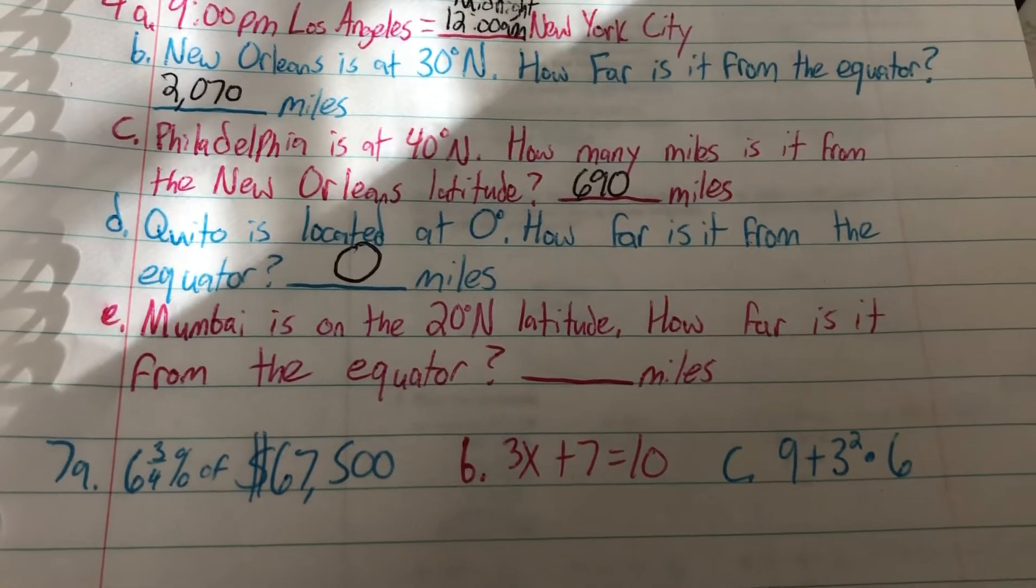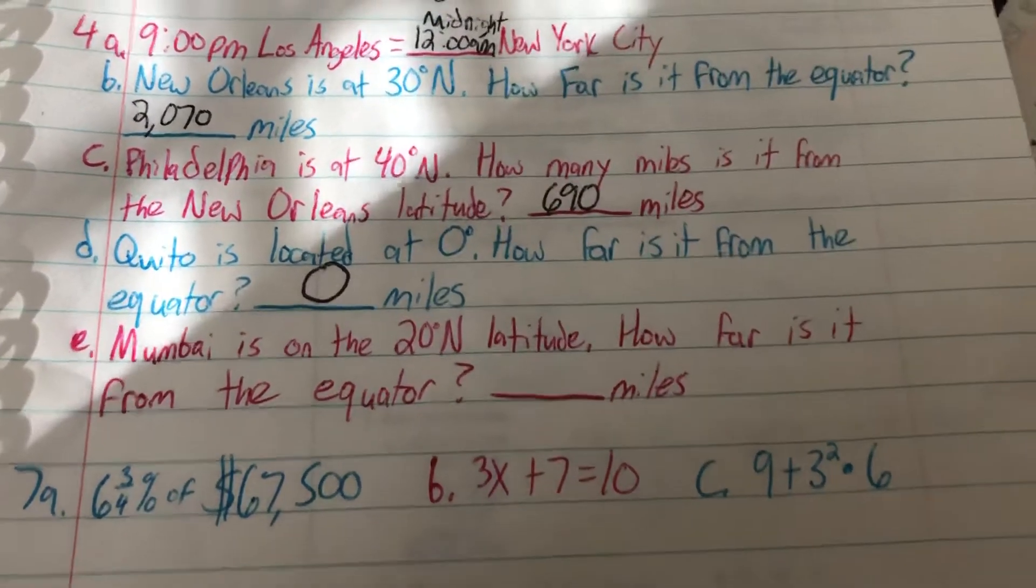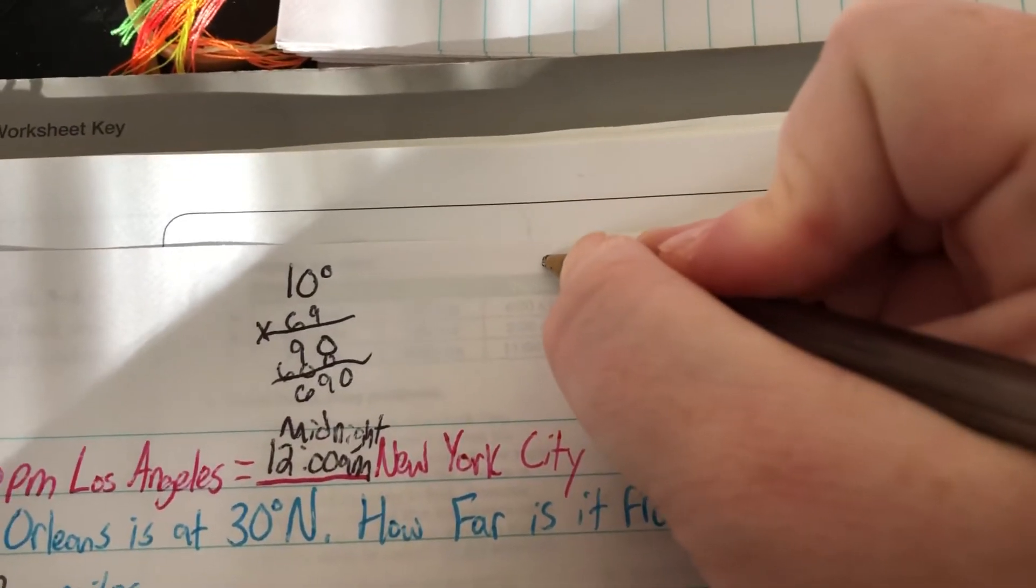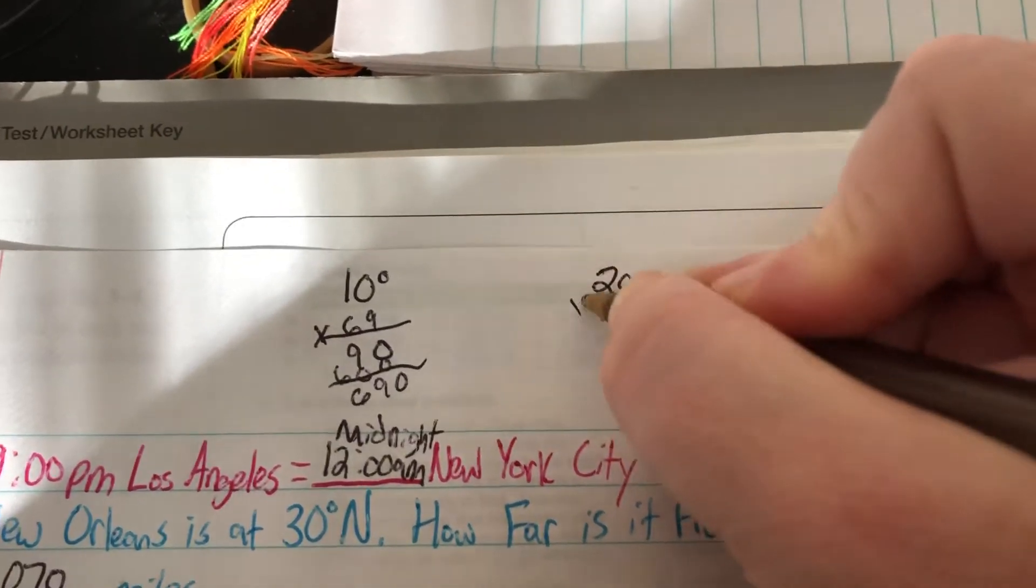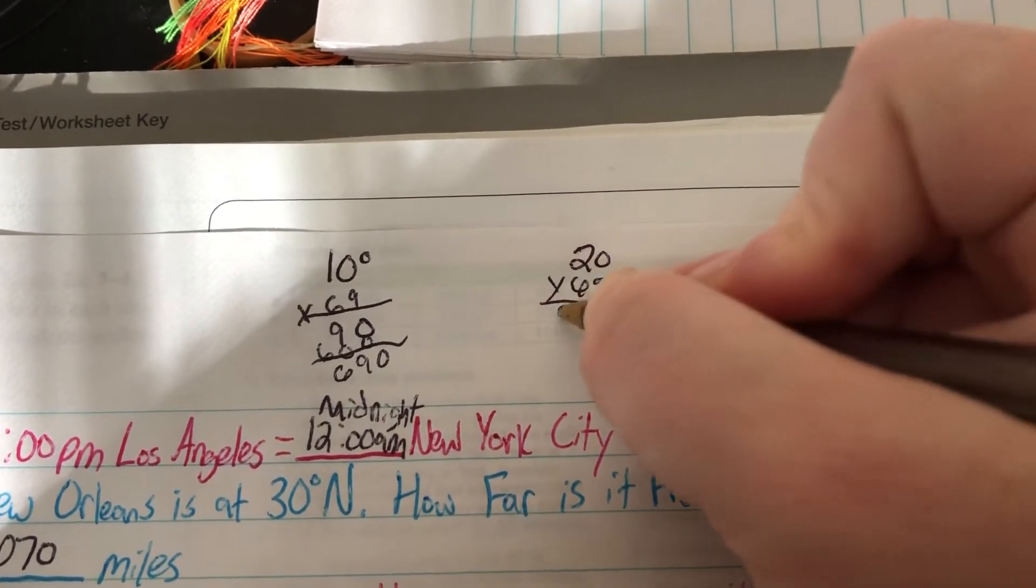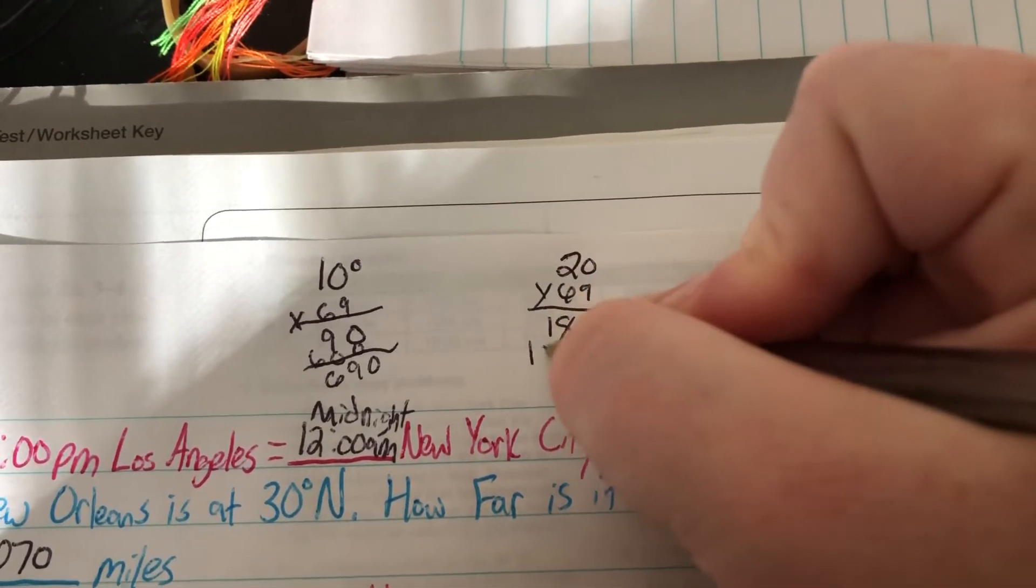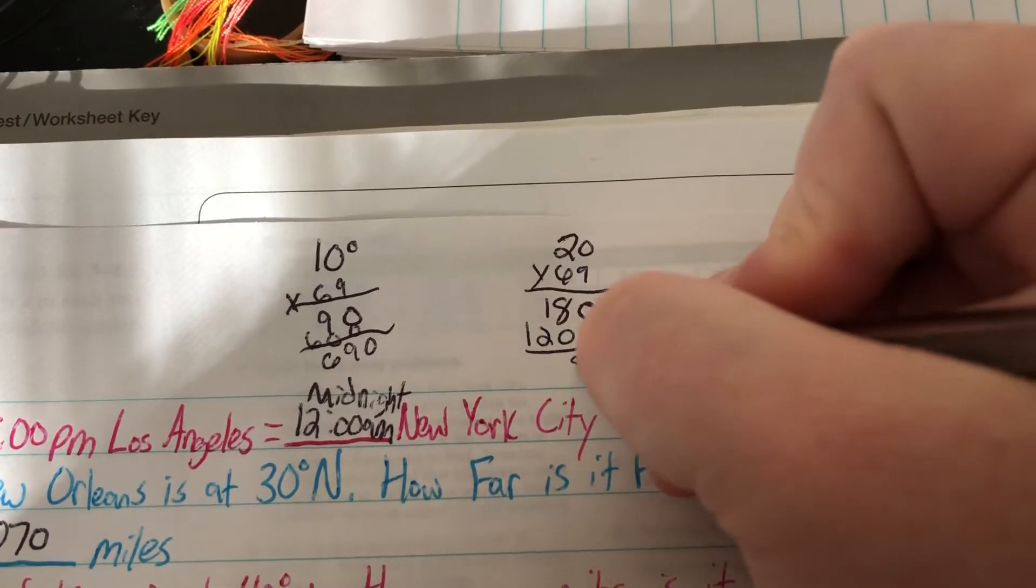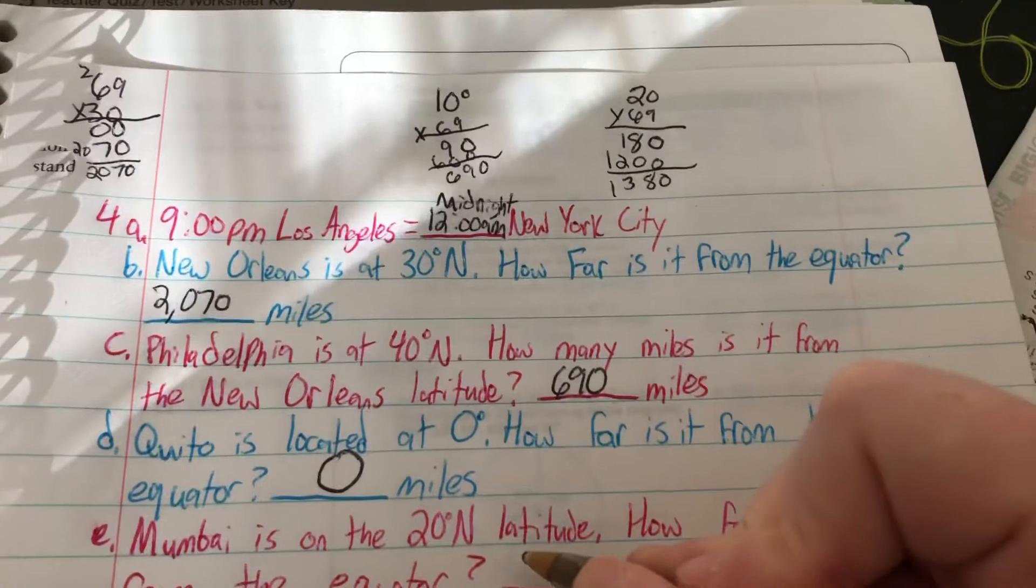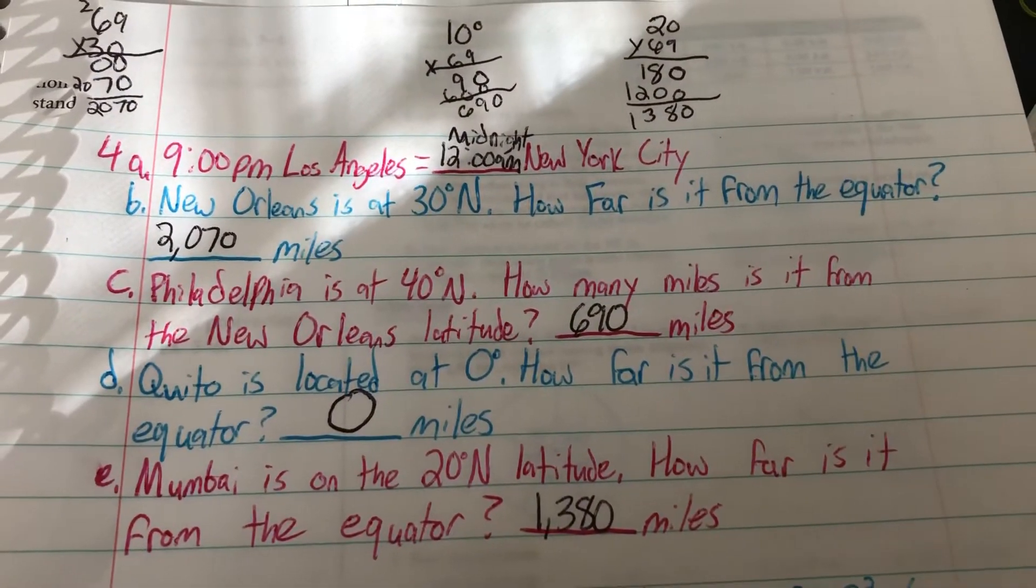Mumbai in India is on the 20 degrees north latitude. How far is it from the equator? Well, that's when we do times 69. So 20 degrees times 69. 9 times 0 is 0, 9 times 2 is 18. 6 times 0 is 0, 6 times 2 is 12. So it is 1,380 miles from the equator.